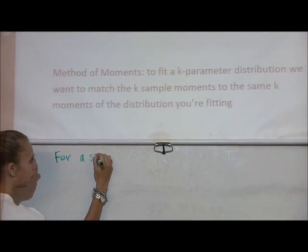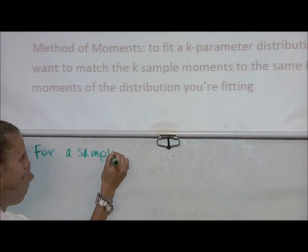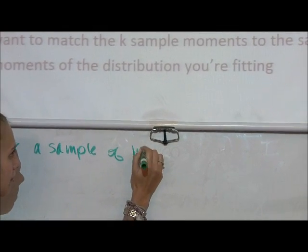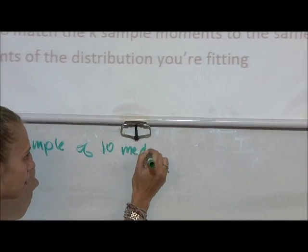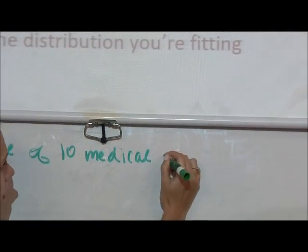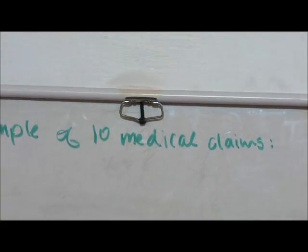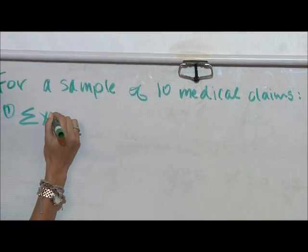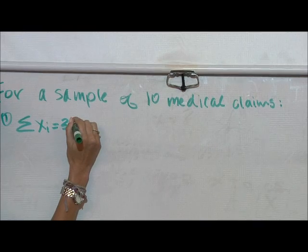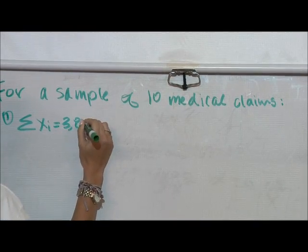For a sample of 10 medical claims, we have the following. The sum of all the Xi's equals 3,860.